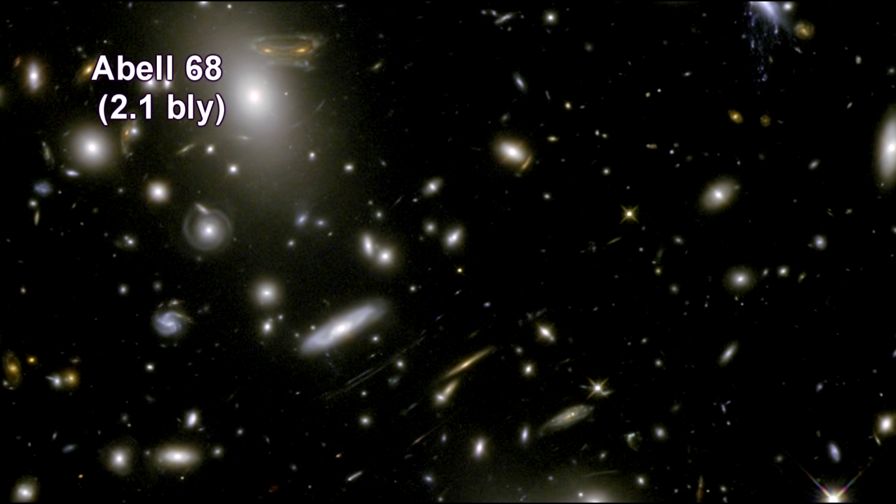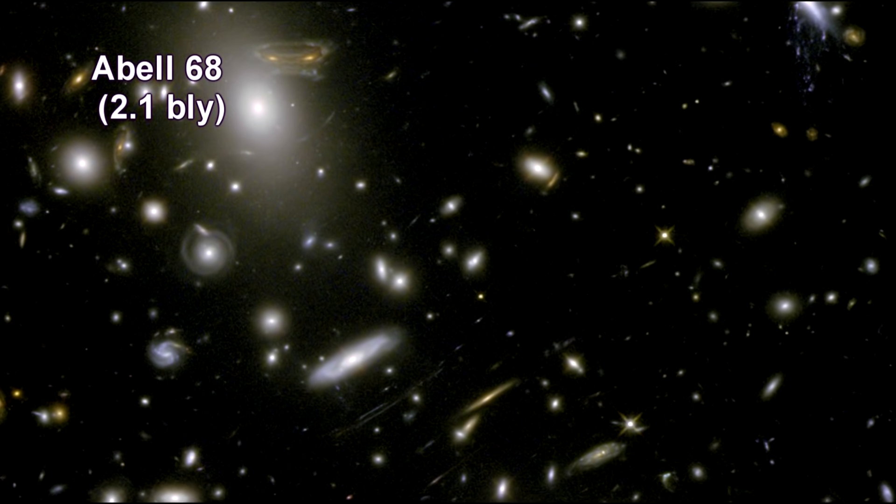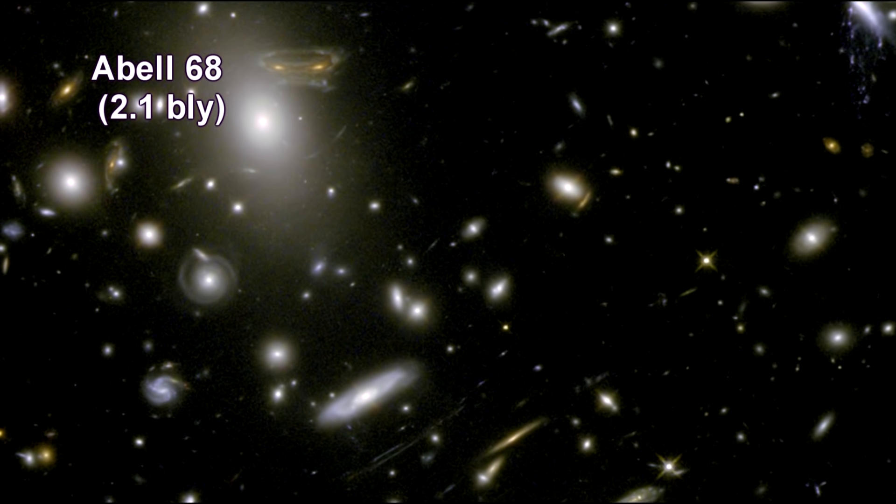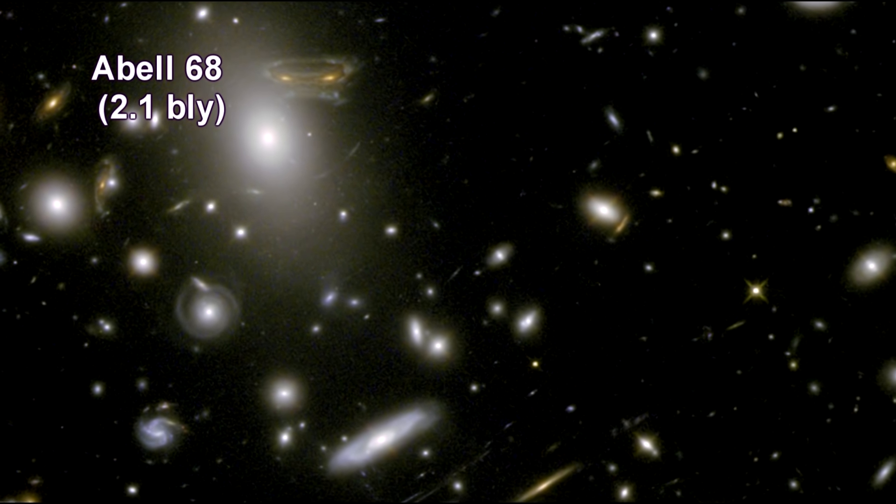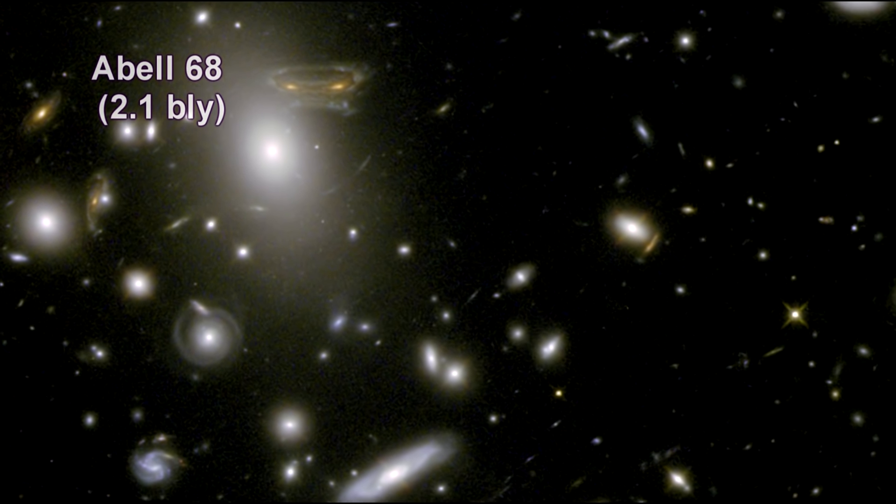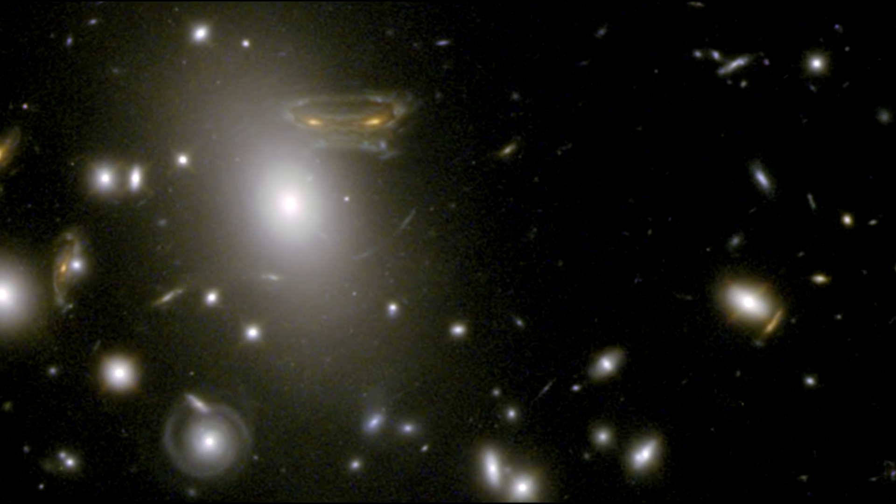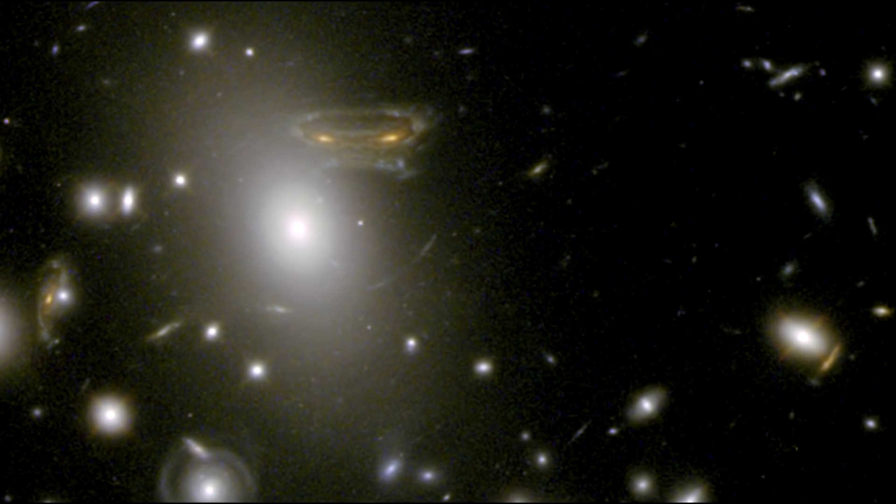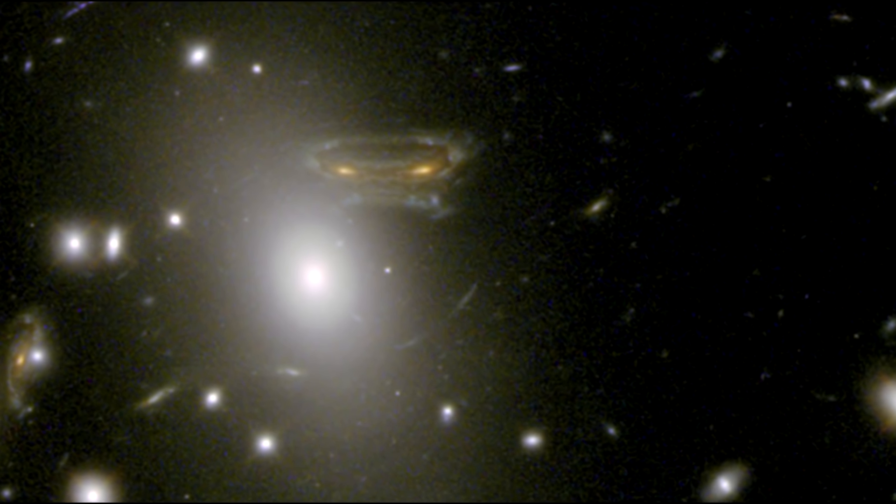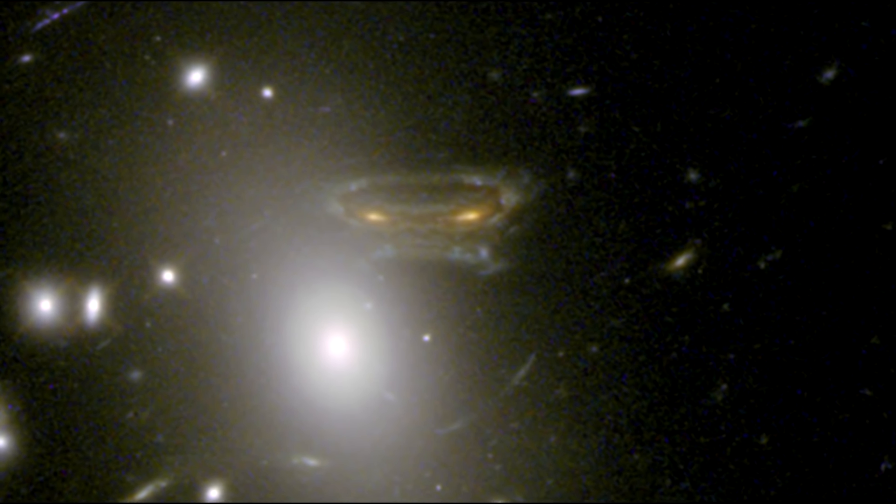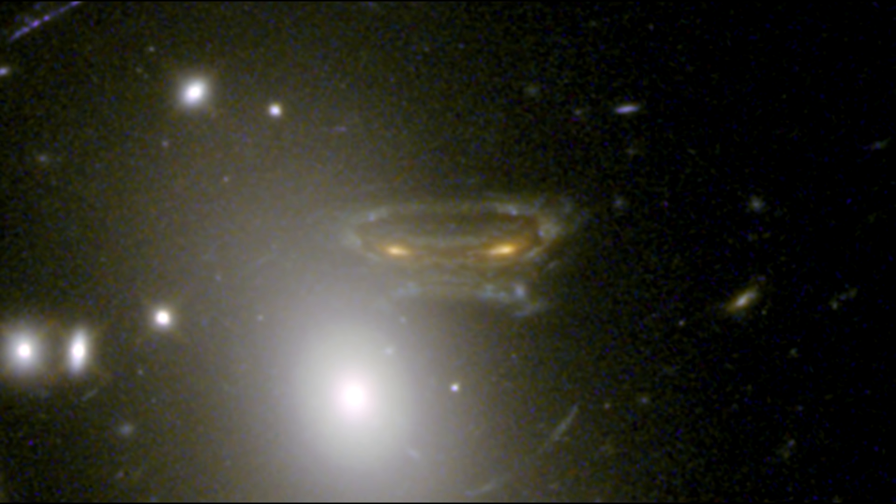You'll remember the Einstein rings we discussed in our segment on the cosmos. Here again we see how the gravitational field surrounding this massive cluster of galaxies acts as a natural lens in space to brighten and magnify the light coming from very distant background galaxies. In this photo, the image of a spiral galaxy at the upper left has been stretched and mirrored into a shape similar to that of a simulated alien from the classic 1970s computer game, Space Invaders. The galaxy is visible twice because its light followed two separate paths around Abell 68 before reaching us.